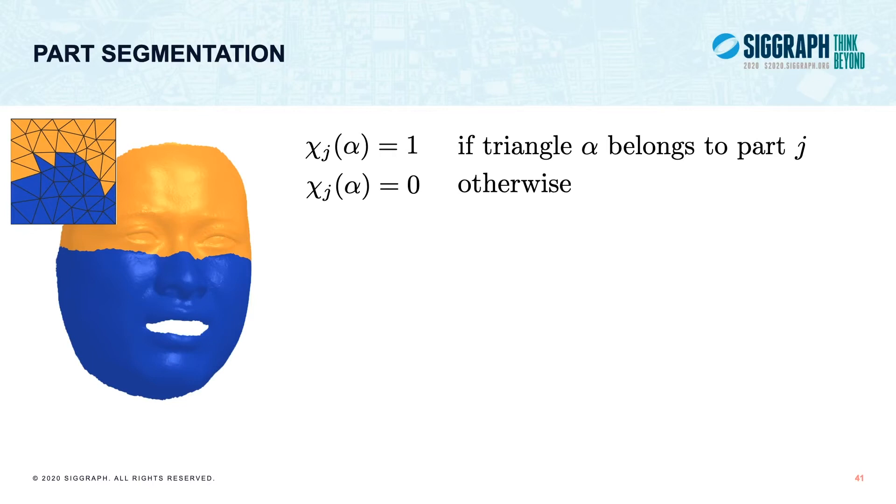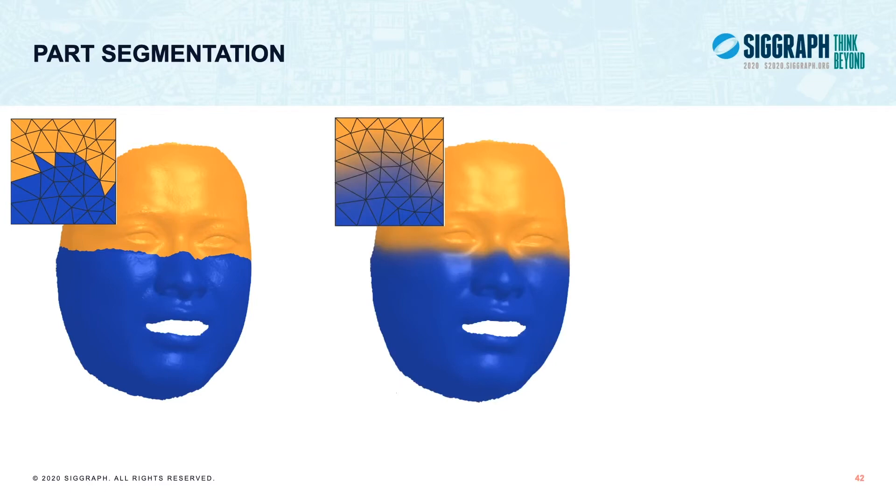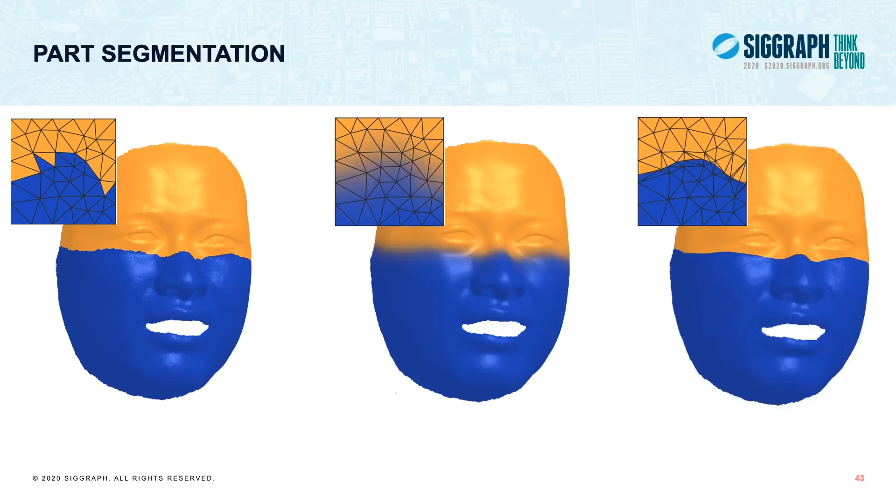We smooth per-triangle part boundaries by treating each part as an indicator function. This function is one if triangle alpha is in part j and zero otherwise. We move each indicator function in a per-vertex quantity by taking a triangle area weighted average with a triangle values. Treating each per-vertex quantity as interpolated values of a piecewise linear function defined over the mesh, we mollify each segmentation function by a Laplacian smoothing. Finally, the smooth part boundaries are extracted and we propagate this segmentation to all frames and denote this new mesh sequence as a matrix Y.